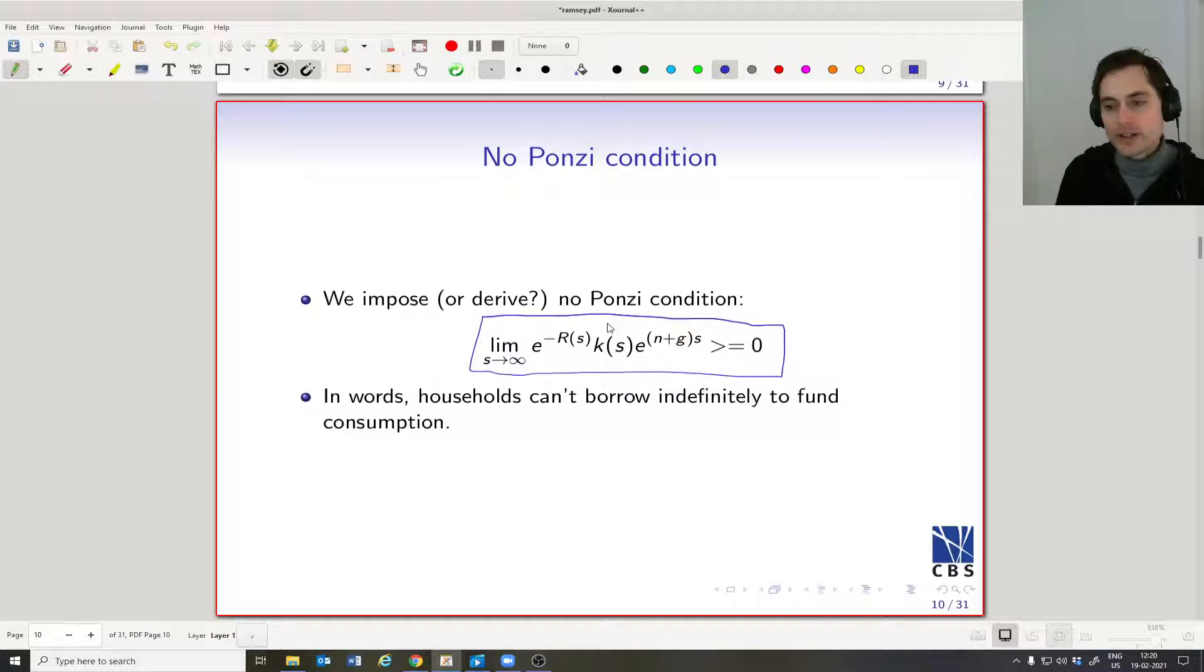So how can we understand this mess of notation? If you look at little k(s), you can see that we have this e to the power (n + g) times s here. So in a sense, what this is really saying is just big K(s), because the denominator of little k(s), which is the amount of workers in the economy and the human capital level.